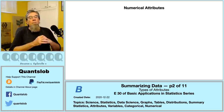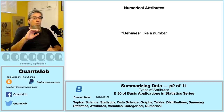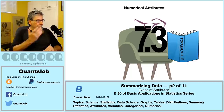Moving forward, we're going to work with Arabic numerals with a point decimal separator. The second criterion to define a numerical or quantitative attribute is pretty subtle but really, really important: how do these numeral values behave?